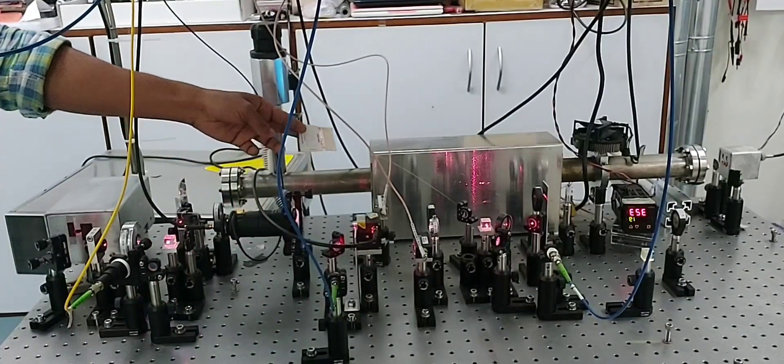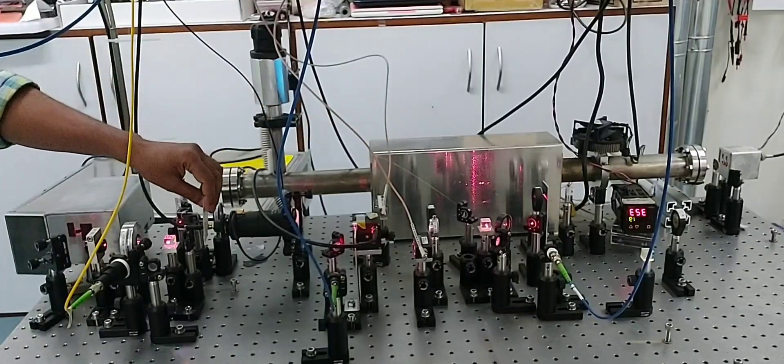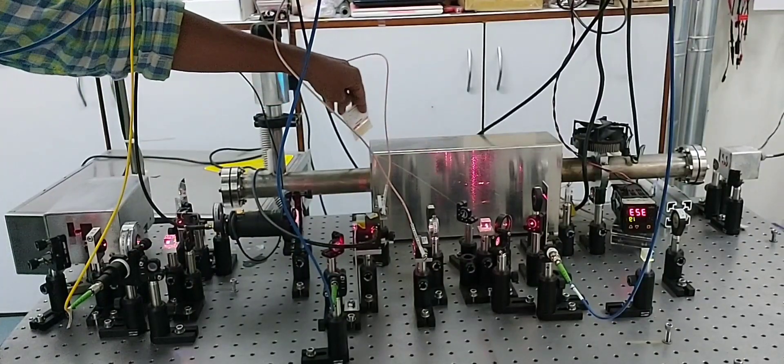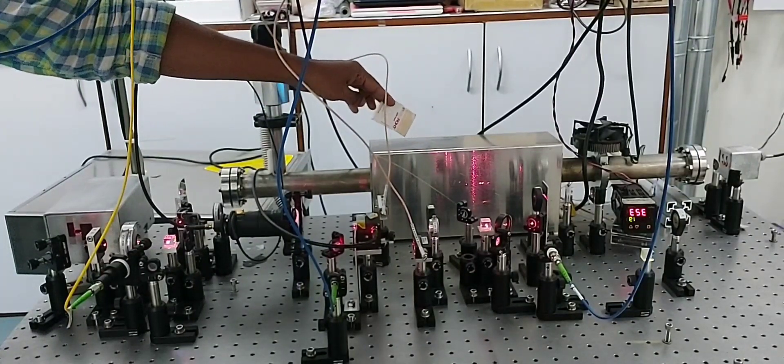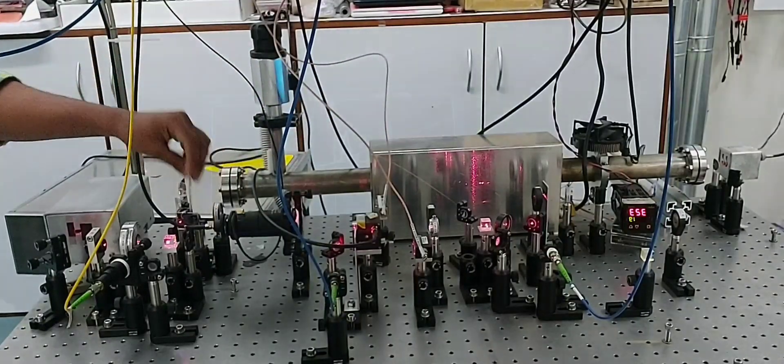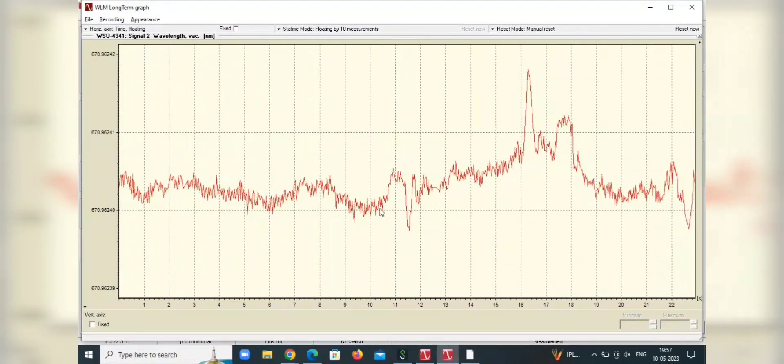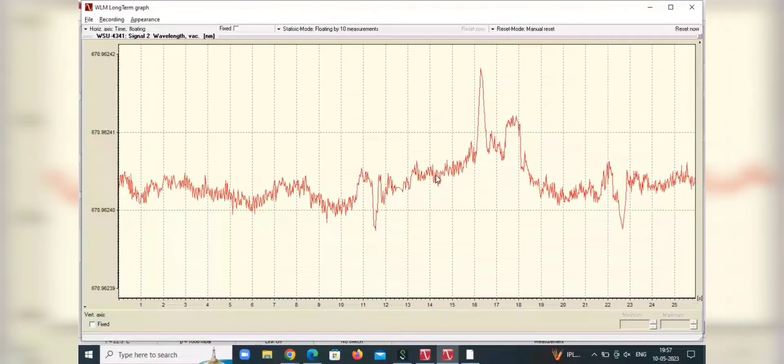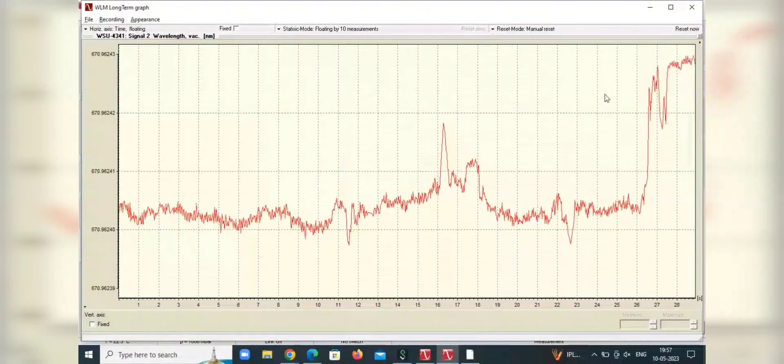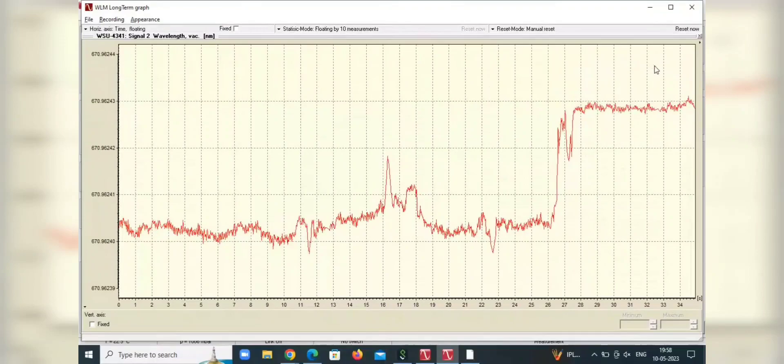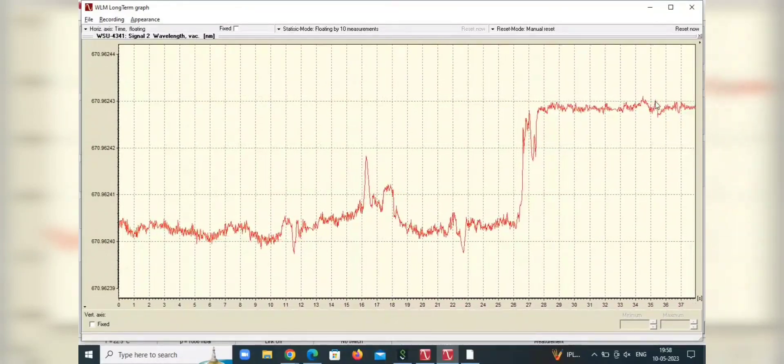For the laser frequency stabilization, we do saturated absorption spectroscopy. In this heat pipe, we have lithium atom and we send laser beam through this heat pipe and do the spectroscopy and the spectra looks like this. We monitor our laser wavelength using a wavelength meter. Right now, our laser wavelength is 670.96 nanometer and this one is showing how it is changing with time and this is not stable yet. Now, if we lock our laser to the resonance, then you can see that it is not changing. It is staying on the resonance. Now, we are ready to do laser cooling and trapping of lithium atoms.